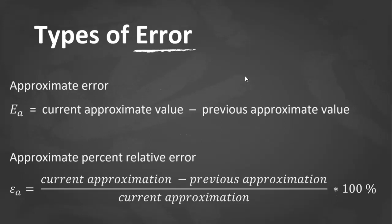For these situations, an alternative is to normalize the error using the best available estimate of the true value, and that is the approximate value itself. As in the equation shown, where a signifies that the error is normalized to an approximate value.